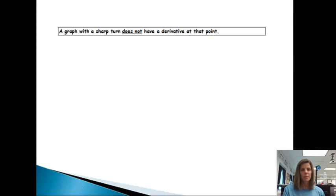Okay, first property. A graph with a sharp turn does not have a derivative at that point. Let me give you an example. Let's say this is my graph. It's an absolute value graph. Okay, we'll put an x and y axis on this thing.